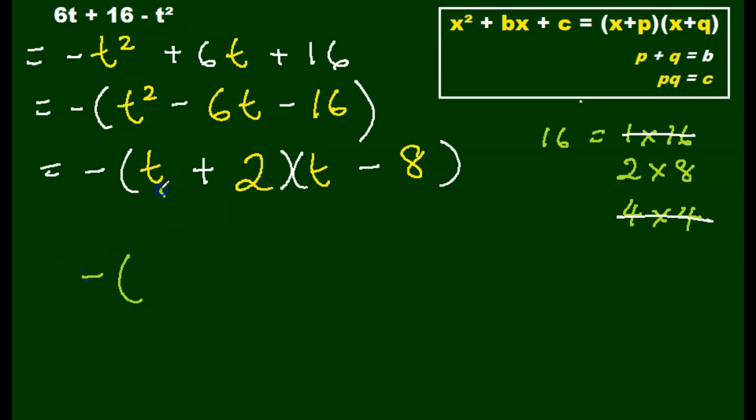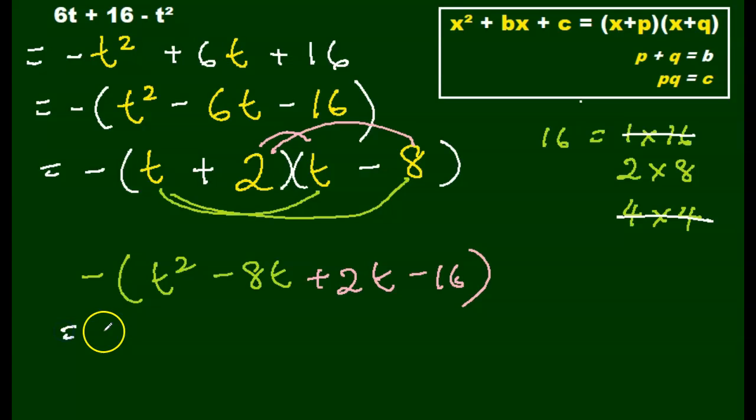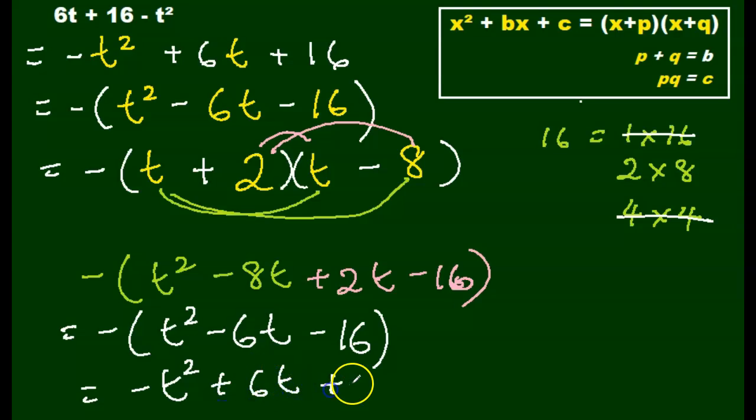Negative on the outside. t times t gives me t squared. Negative 8t times t gives me negative 8t. 2 times t gives me 2t. 2 times negative 8 gives me negative 16. Simplify that. Still have my negative on the outside. That is t squared. Negative 8 plus 2 is negative 6t minus 16. Distribute our negative sign in there. And that gives me a negative t squared plus 6t plus 16. Remember, we have to change the signs when we remove the parentheses. Does that pan out with our original? Yeah.